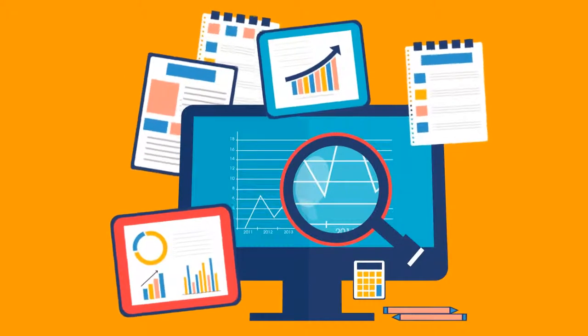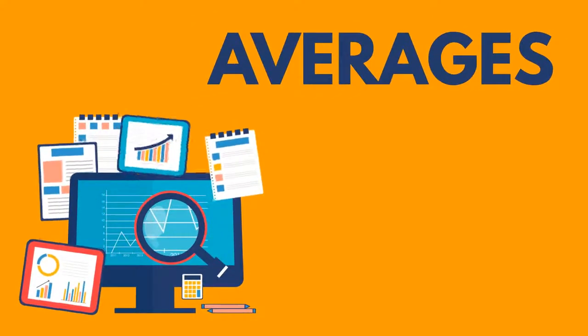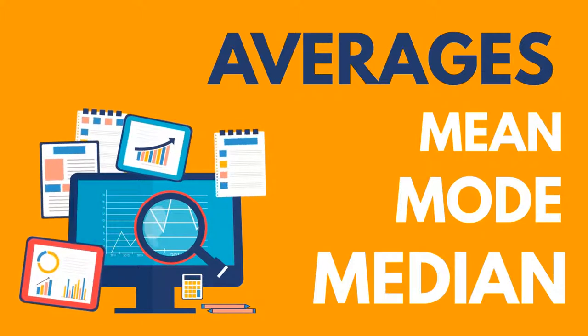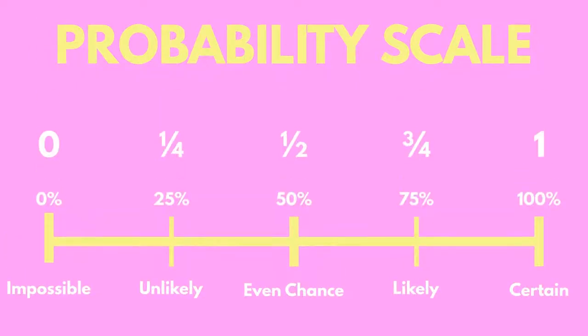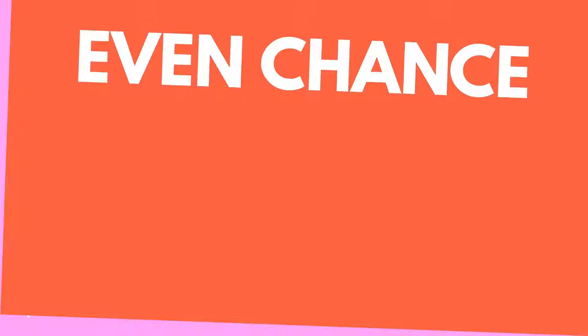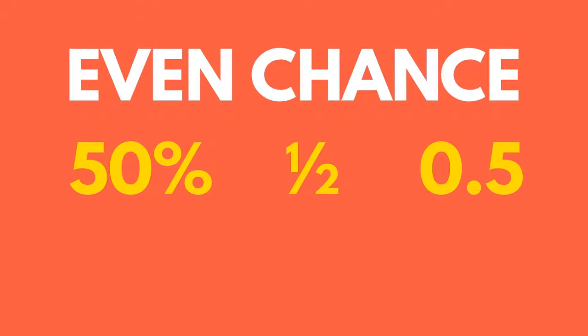With our recorded data, we can calculate trends or averages using the mean, mode and median. A probability scale is used with terms such as impossible, unlikely, even chance, likely and certain. This can equate to percentages, fractions and decimals. An even chance may equate to 50%, half as a fraction or 0.5 as a decimal. Certain would equate to 100% or one whole.